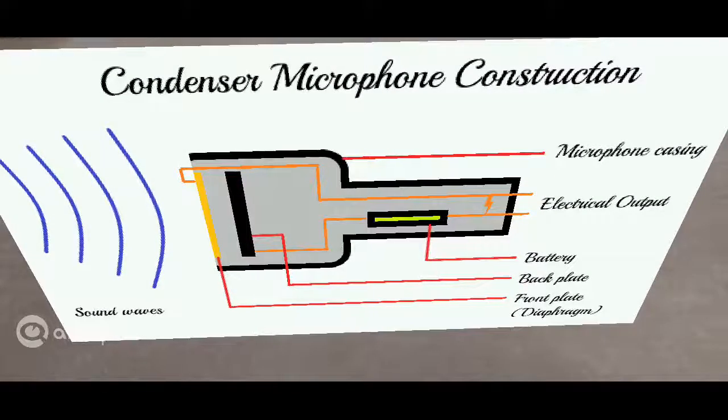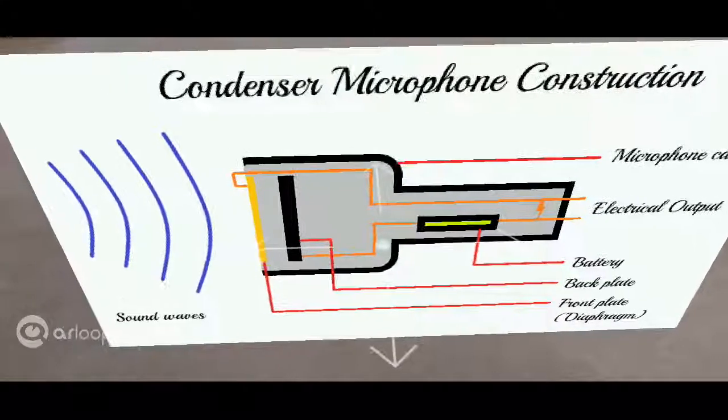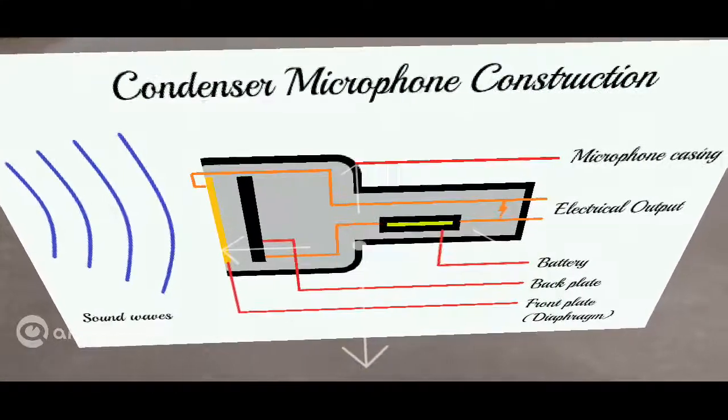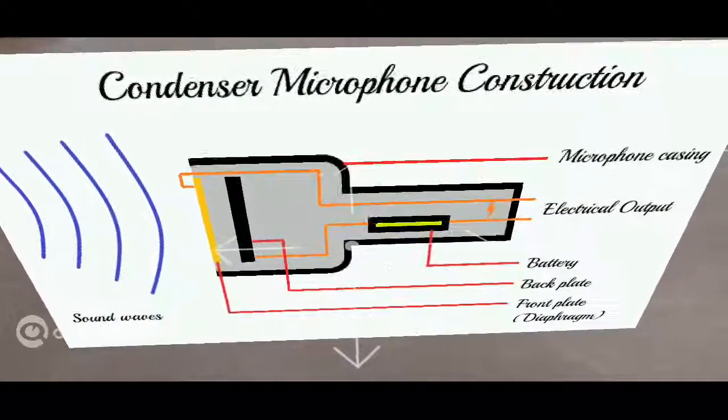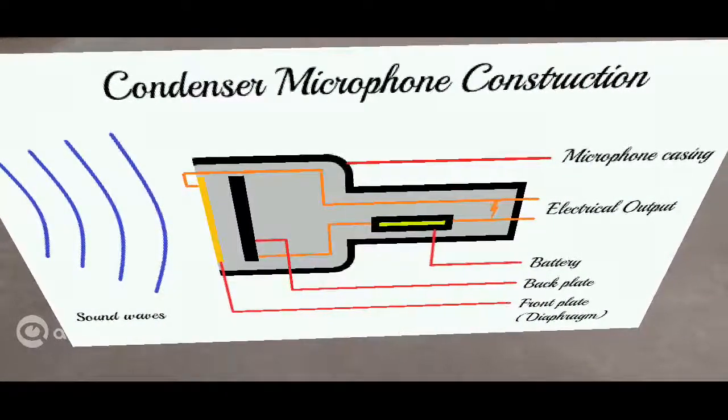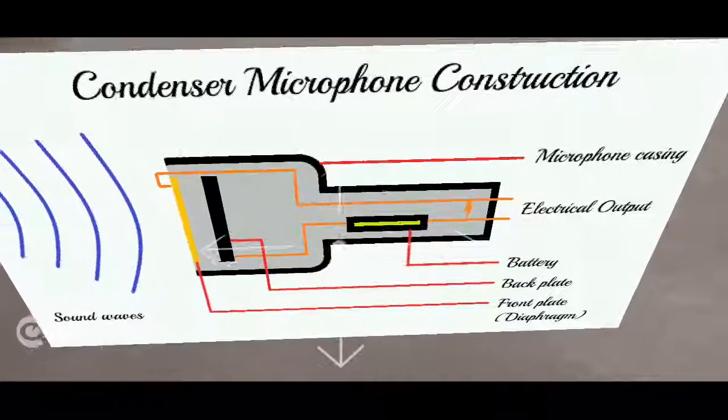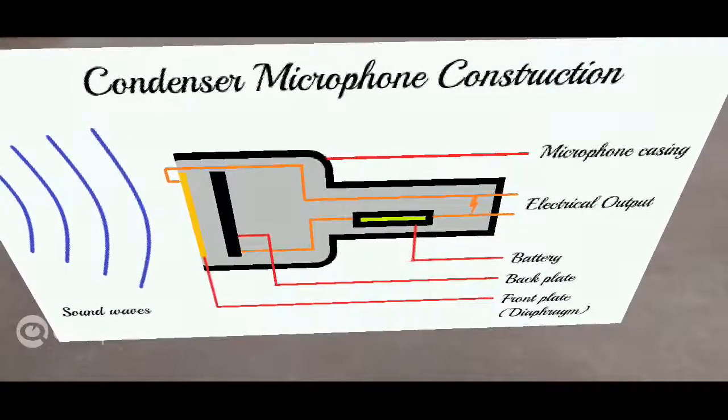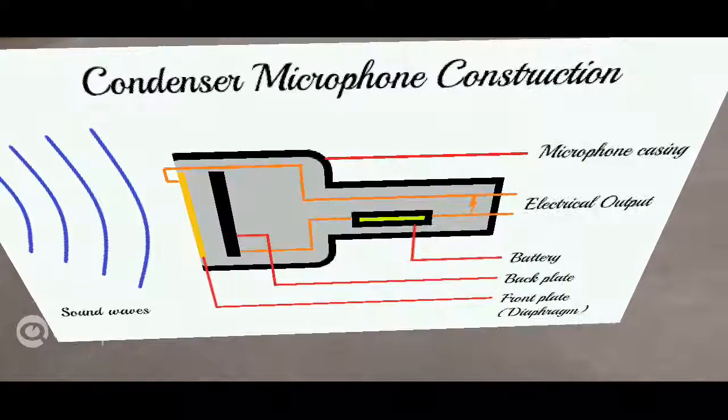Now let's discuss the working principle. So when sound waves arrive, they're oscillating motions. They vibrate back and forth due to compressions and rarefactions and they hit the diaphragm, and the diaphragm also starts moving back and forth. Remember, the diaphragm is a free moving object here but the back plate is fixed.